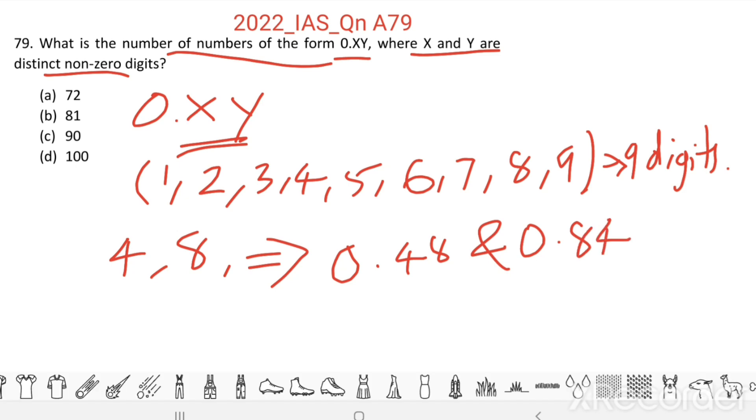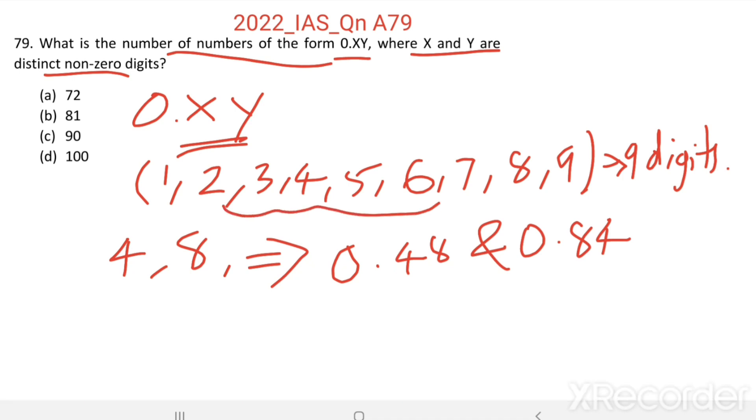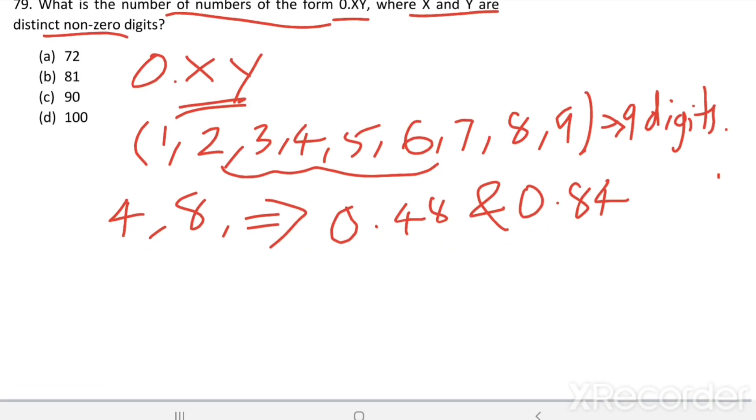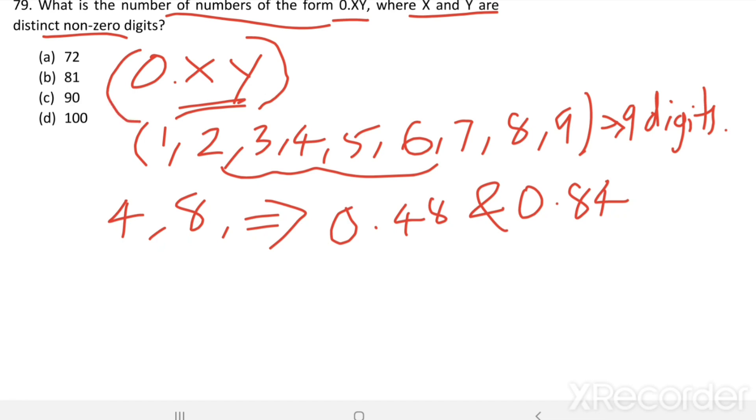If we take 2 digits from these 9 digits and arrange them, we will get the total number of numbers in the form 0.xy.